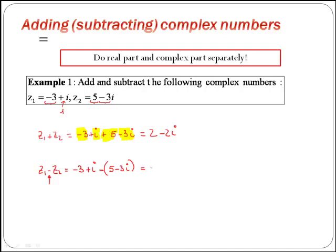Therefore, removing the brackets we have minus 3 plus i minus 5 plus 3i. If we do as before and join like terms, real part with real part gives us minus 8, and then imaginary part with imaginary part gives us plus 4i.